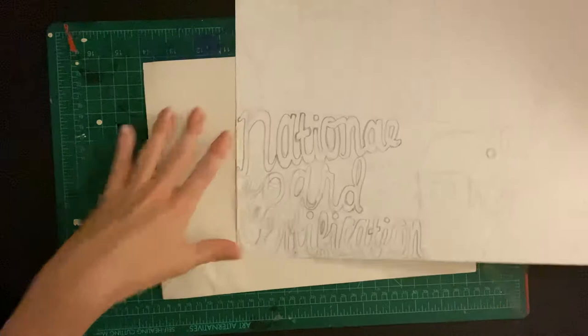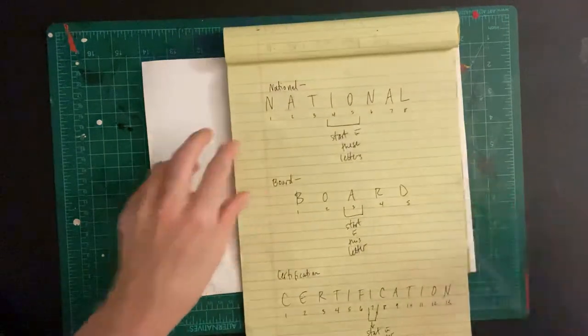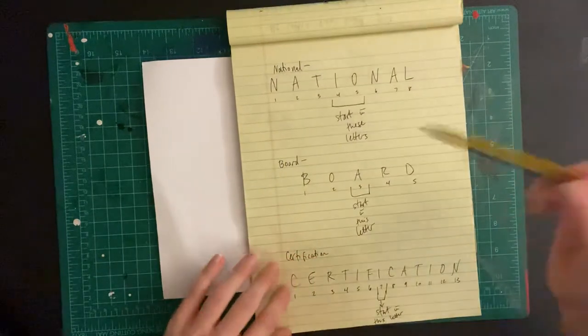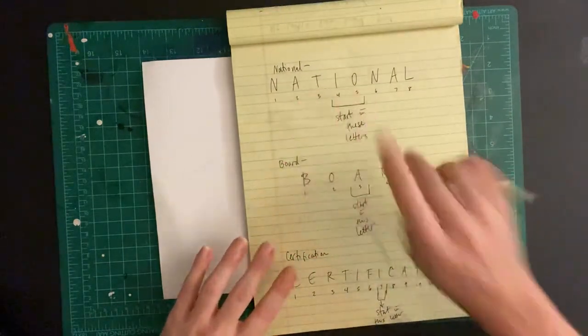especially if you are including something that has a lot of letters in a word for your vision board. And I'm going to use an example that I did, which is that I am working towards national board certification this year.